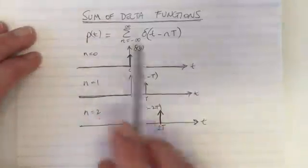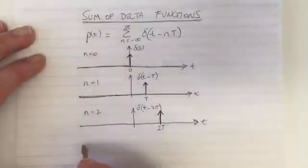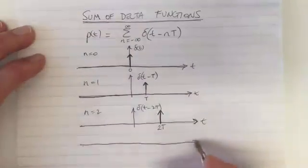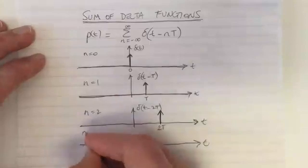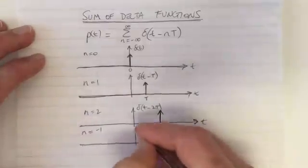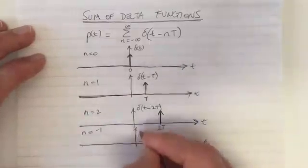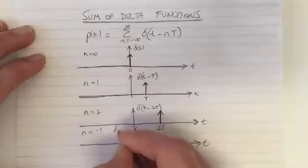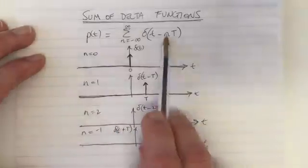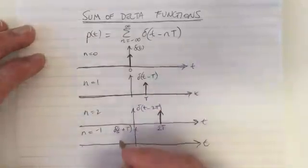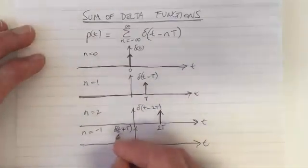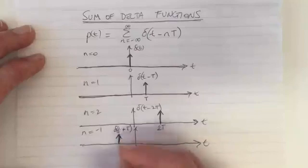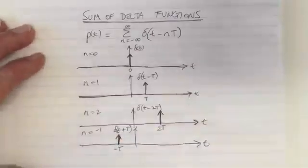The same thing for negative values of n. So n is negative, it also holds. We'll pick one: n equals minus 1. That's also a delta function. That's going to be delta of t plus T. n equals minus 1 means t plus capital T. That's happening at a value of minus T. That's that function.